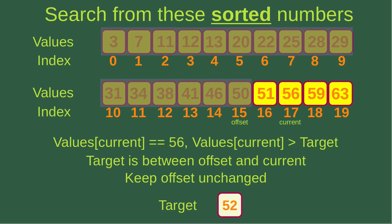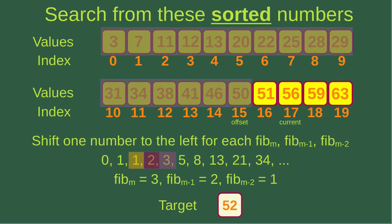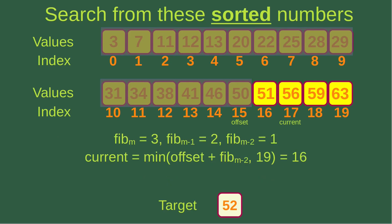The current index of 17 gives me a value of 56, which is larger than the target. This means the target is between the offset and the current, so I don't change the offset. I shift one number to the left: Fibonacci M is 3, Fibonacci M-1 is 2, Fibonacci M-2 is 1. Offset is 15 and Fibonacci M-2 is 1, so the sum is 16. Comparing 16 to 19 gives 16 as the smaller value, so current becomes 16.